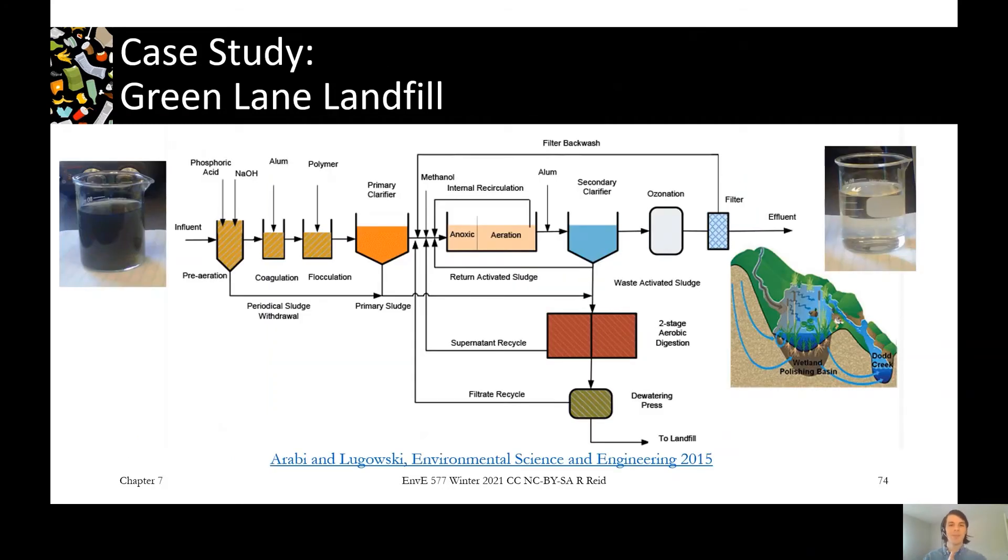I'll give you an example of one plant. This plant happens to look very much like a domestic wastewater treatment system. This is the leachate treatment system used at Green Lane Landfill owned by the city of Toronto. So you can look at the process train here and it looks very similar to domestic wastewater treatment. A couple little differences. So coming in, we've got a pre-aeration because our liquid is probably going to be anaerobic coming in from the bottom of the landfill.